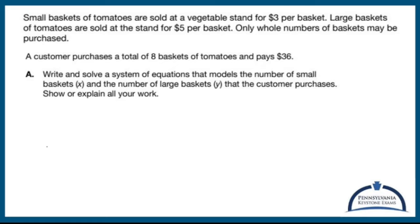Small baskets x are three dollars per basket. 3x. On top of that, five dollars are going to be the cost of the large baskets which is y. So 3x plus 5y, and this person is paying 36 dollars. So usually when you have a system of equations, one of your equations is going to have to do with price, cost, money. The other equation is usually total.